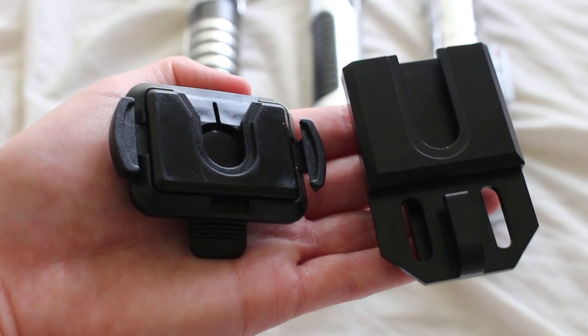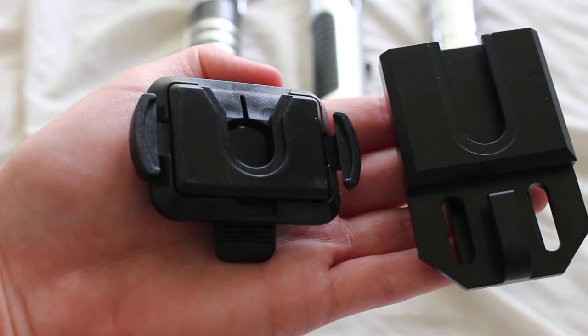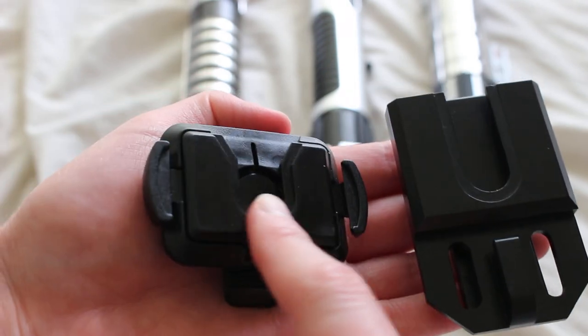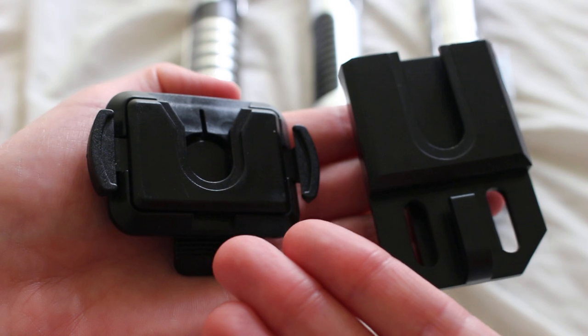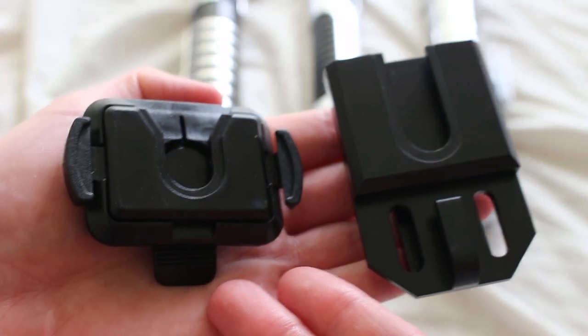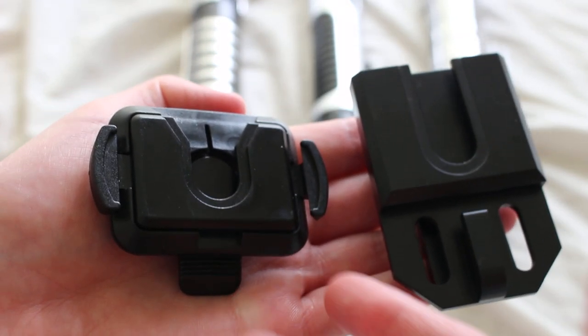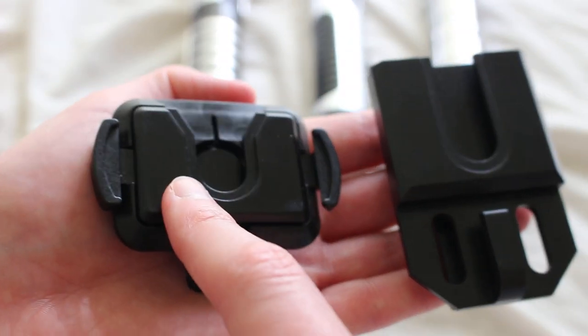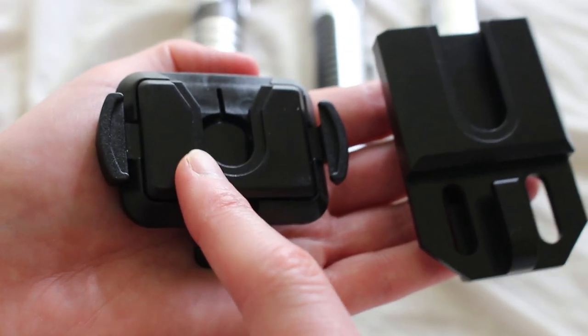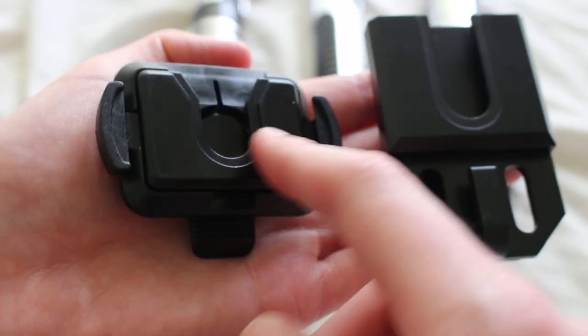You may have noticed that SaberForge carries two different types of lightsaber belt clips. The one on the left is a very standard CoverTech belt clip. It's designed to accommodate a lightsaber with a CoverTech wheel or CoverTech knob on it. And you kind of slide that in there.